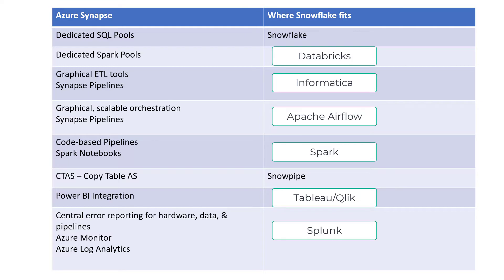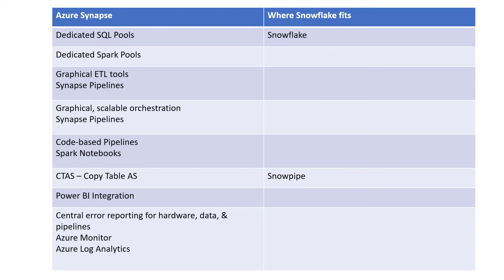My point is that because Synapse has one combined ecosystem and Snowflake requires a lot of different products to do the same thing, Synapse really allows the data engineer to focus on delivering value to the organization and not spend a lot of time on plumbing — like trying to get things secure, trying to get all of these things talking to each other, trying to get error reporting to the same place. You should be spending time cleaning data, preparing data, organizing data, and getting the data as quickly as possible to your users.